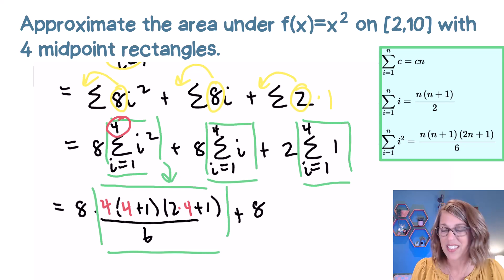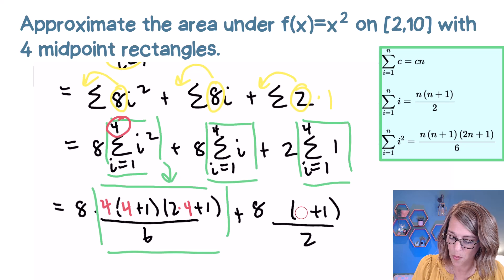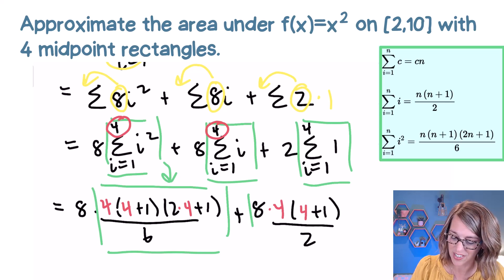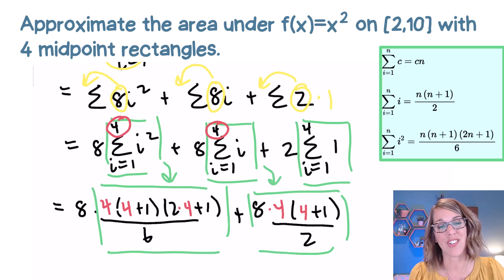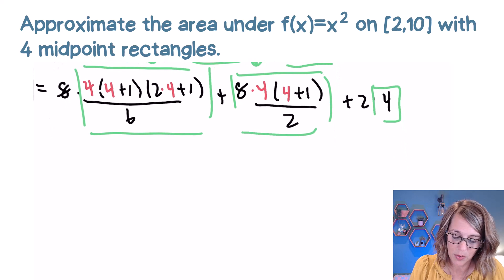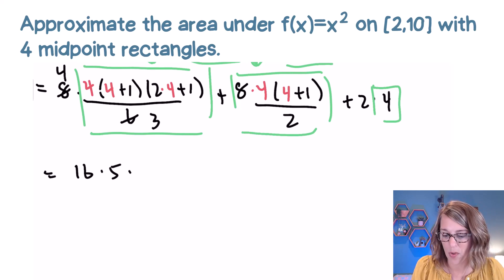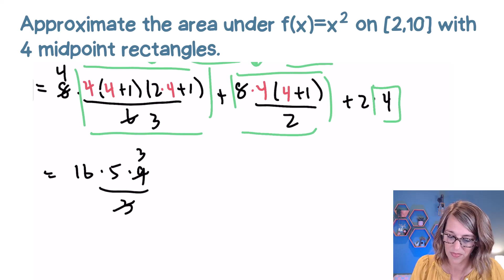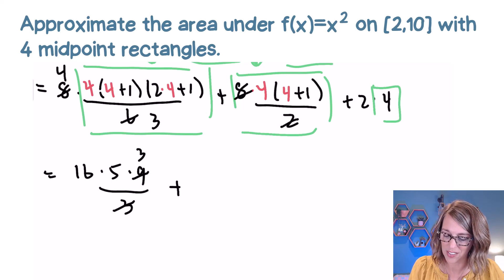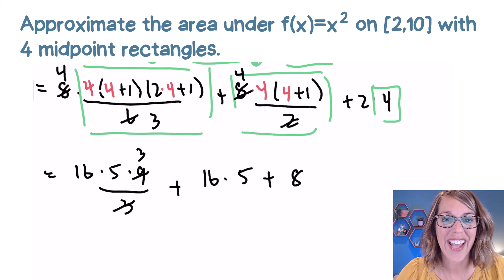The sum of i from 1 to n is n(n+1)/2, so with n equals 4 that's 8 times 4 times 5 divided by 2. And the sum of 1 four times is just 4, giving 2 times 4. After canceling the 2 and 3 in the first term, I get 4 times 4 times 5 times 9 divided by 3 — the threes cancel — and the second term gives 16 times 5, plus 8. Adding everything up on my calculator gives 328.